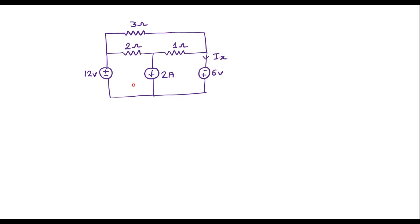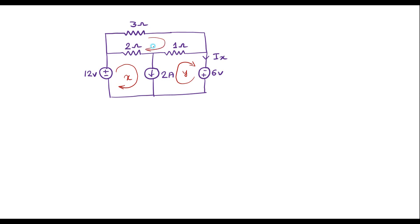In mesh analysis, we are supposed to find out the number of loops. Here we have three loops — this is one loop, this is one loop, and this is one loop. I will assume current flowing in the first loop is x, taking the current direction from positive to negative. Here we have another loop; this end is positive, this end is negative — I will assume current through this loop is y. And here there is no voltage source, so I can consider the direction in any way. I will take the direction of this loop as z.